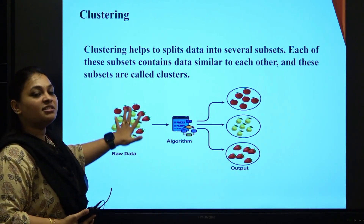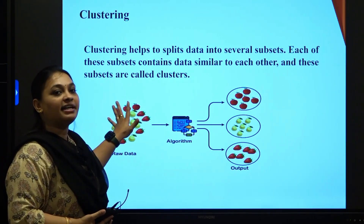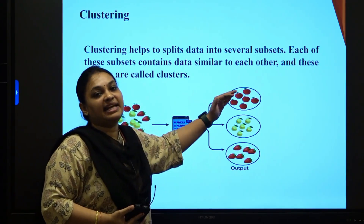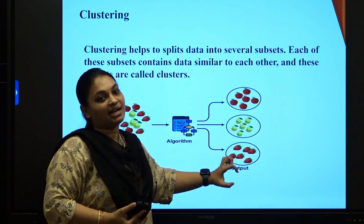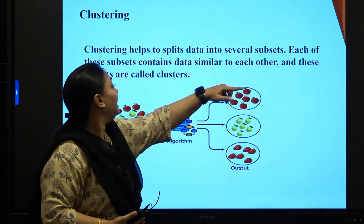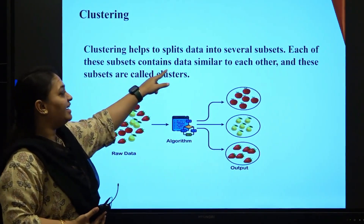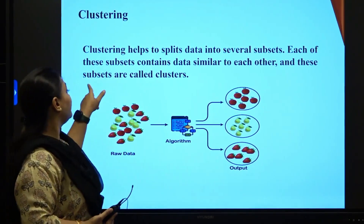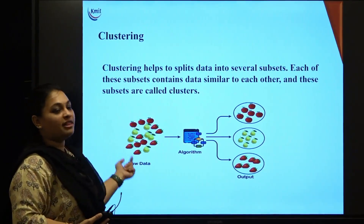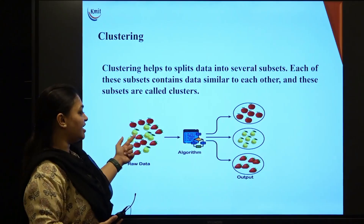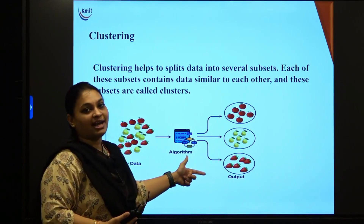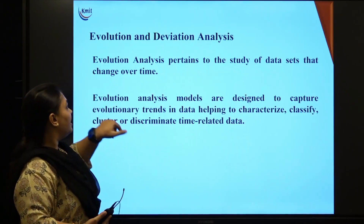In brief: you have raw data with all different things together, you apply an algorithm so that it gets segregated into small clusters. Clustering helps to split data into several subsets; each subset contains data similar to each other, and these subsets are called clusters.